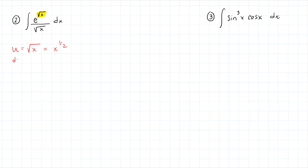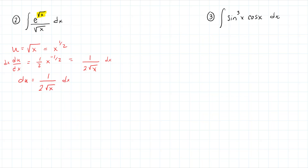I'm going to start with u = √x, or x^(1/2). I think this is a good idea because what's in the exponent of the exponential was composed into an exponential. Taking the derivative: du/dx = ½ x^(-1/2), which is 1/(2√x). Multiplying both sides by dx: du = 1/(2√x) dx. Up in the integral I see a square root in the denominator, so I'll write this as e^√x times 1/√x.